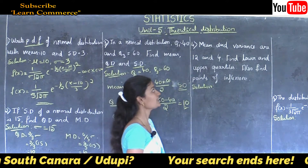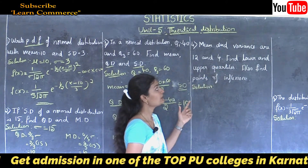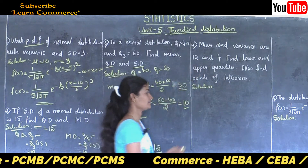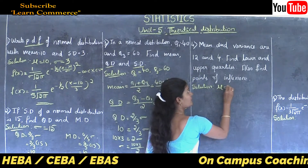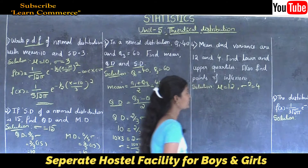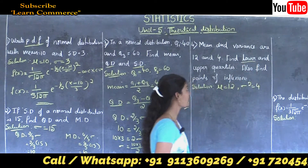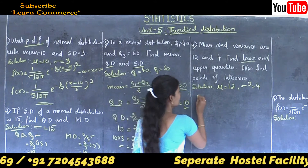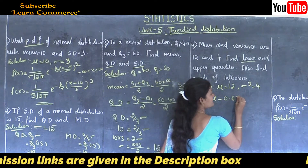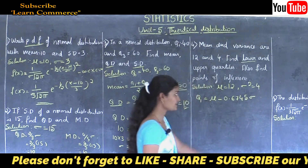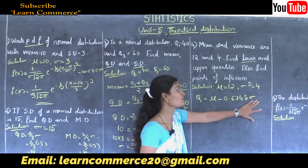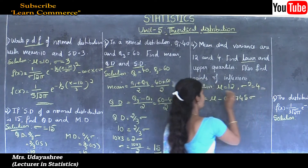The fourth question: mean and variance are 12 and 4. Find lower and upper quartiles and also the points of inflection. Given mean mu = 12 and variance sigma² = 4. We need sigma (standard deviation), not variance. Standard deviation sigma = sqrt(4) = 2. The formula for lower quartile is Q1 = mu − 0.6745 × sigma.